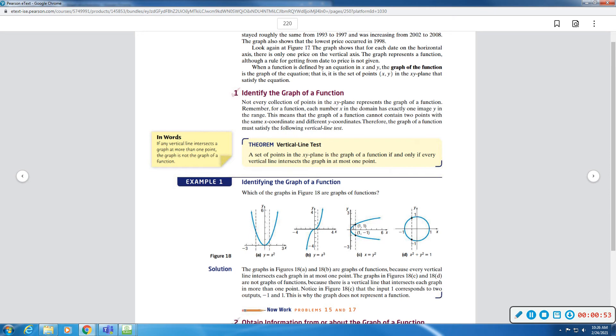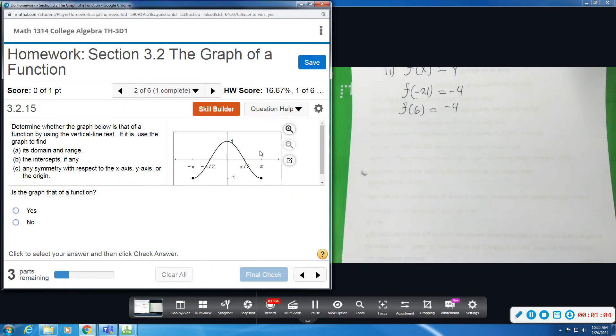So these two would be functions. If a vertical line were to cross twice, so you see how we have two points here, this would not be a function. It would fail the test. So these two are not functions, these two are. So in the example that we have here, if I drew a vertical line on this graph, no matter where, it would cross only once. That agrees, so this is a function.